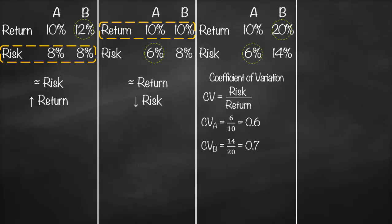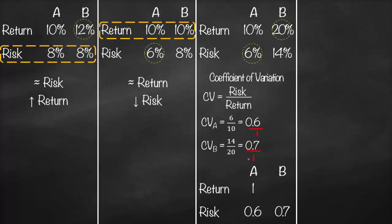For investment B, the risk of 14 divided by the return of 20 gives a CV of 0.7. We can redraw the table: investment A has a CV of 0.6, meaning risk of 0.6 per return of 1. Investment B has a CV of 0.7, meaning risk of 0.7 per return of 1. Since we now have the same return, we choose the lowest risk, which is investment A.